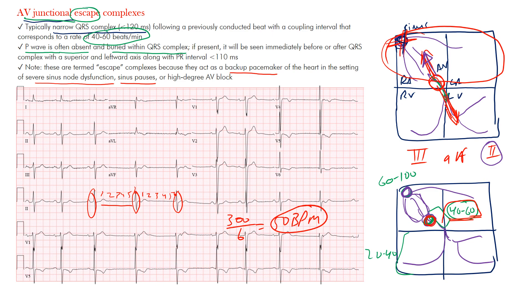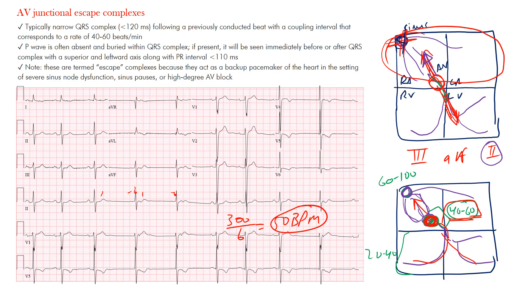To summarize: junctional escape beats have typically narrow QRS complexes because everything below the point of initiation is the same conduction pathway. You may see retrograde conduction into the atria, causing a change in QRS morphology or the T wave. The P wave is often absent or buried within the QRS complex, altering its morphology or the terminal portion of the QRS complex and ST segment.